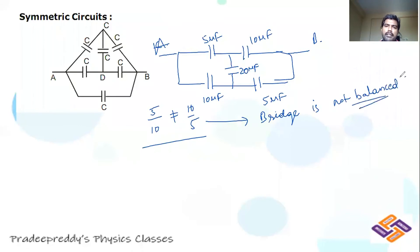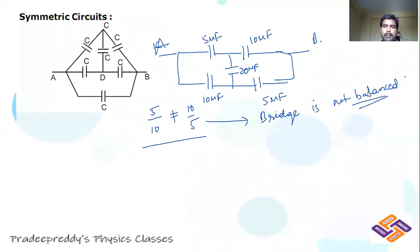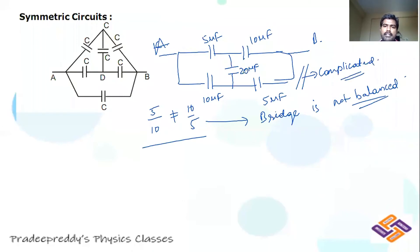If the bridge is not balanced, you must use Kirchhoff's laws individually to find the effective capacitance. That will be taught in the next coming videos or in the current electricity chapter. You cannot eliminate the 20 μF capacitor — unbalanced bridges become complicated. A simple method will also be taught, but that is for current electricity, not now.